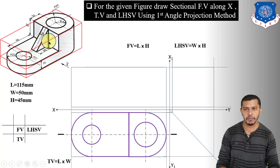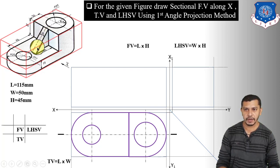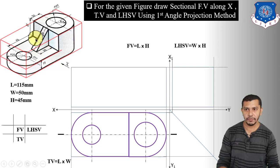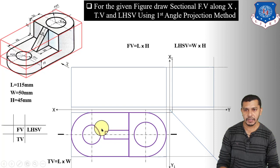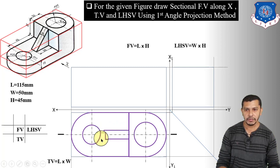Now we have to show the rib in the top view. The rib is seen as a rectangle in the top view having length 30 mm and width 10 mm. From this edge, measure 30 mm in this direction and measure the width of the rib which is 10 mm — 5 mm both sides from the center. Draw the rectangle showing the top view of the rib. This completes the top view of the object.